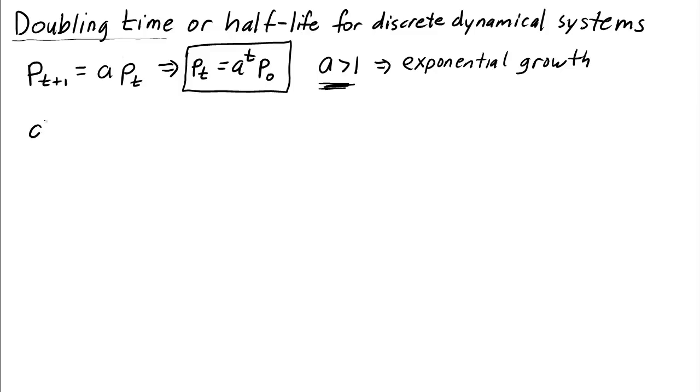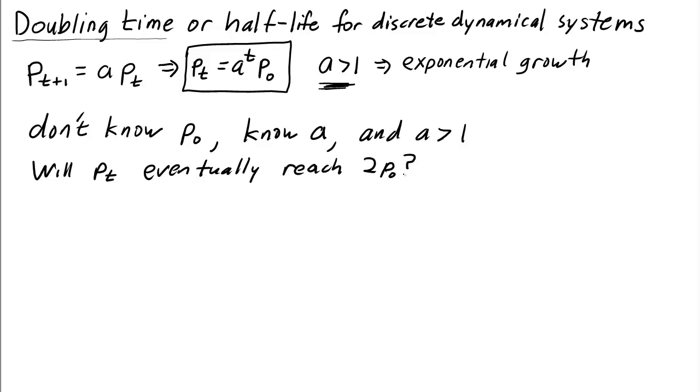Let's say we don't know the initial conditions, but we know a. We know the value of a, and we know a is greater than 1. And the question is, will pt eventually reach 2 times p0? Will the dynamical systems eventually double? Well, if a is greater than 1 and we have exponential growth, it will. And when will it do that?